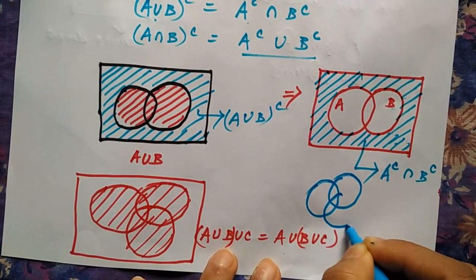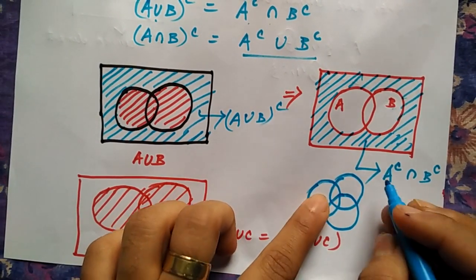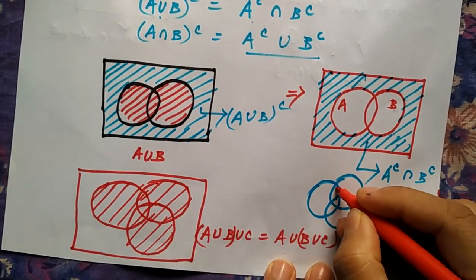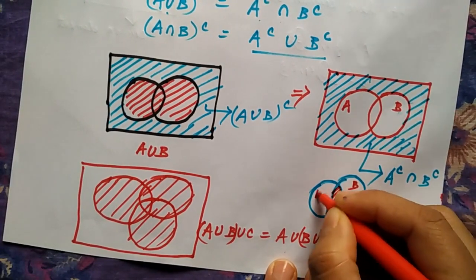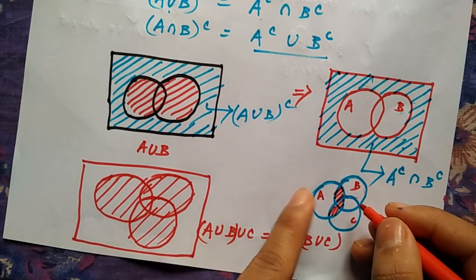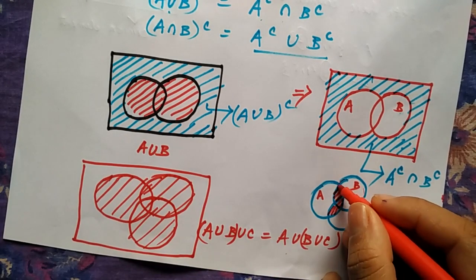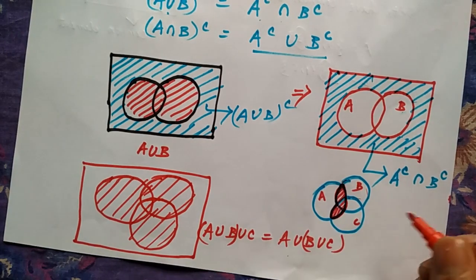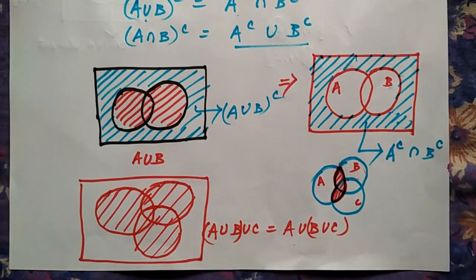For the distributive law, consider sets A, B, and C. A intersection (B union C): first find B union C, then intersect with A. The common part between A and B union C gives us A intersection (B union C). You apply the same approach for all variations of the distributive law.